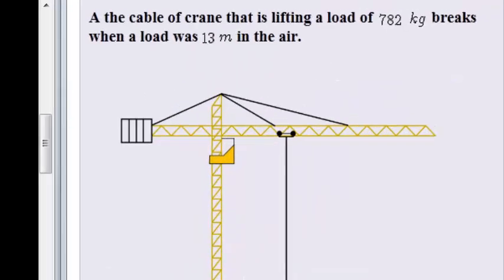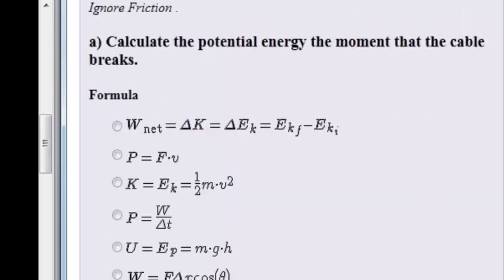A cable of a crane that is lifting a load of 782 kilograms breaks when the load was 13 meters in the air. Calculate the potential energy the moment that the cable breaks.